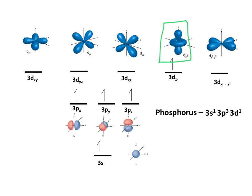And we now have an excited electronic phosphorus electric configuration of 3s1, 3p3, 3d1. And it's time to make our hybrid orbitals.